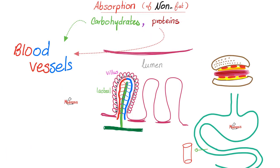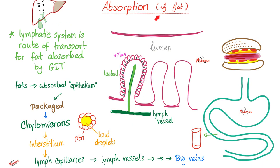After digestion, it's time to absorb the food from the lumen of the gut into the blood. If you are non-fat — carbohydrates or proteins — you will go to blood vessels, because these are water-soluble. But if you are fat, you are fat-soluble, and therefore you will not go to blood vessels. You will go to lymph vessels via the lacteal, which is inside the core of the villus.